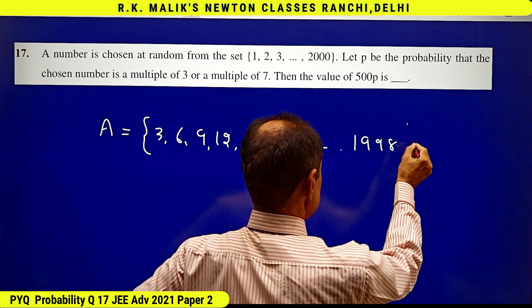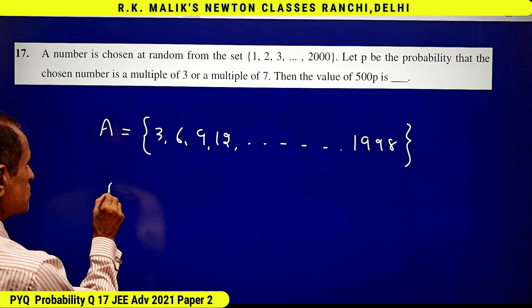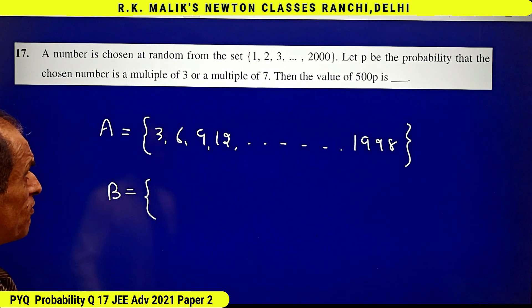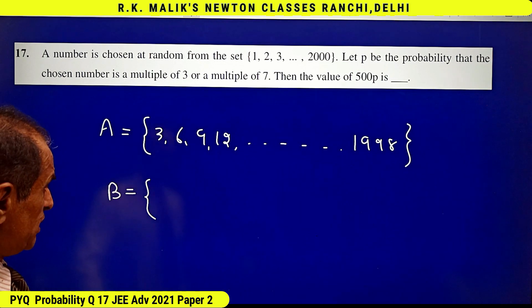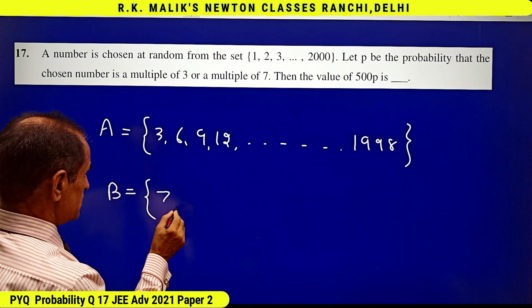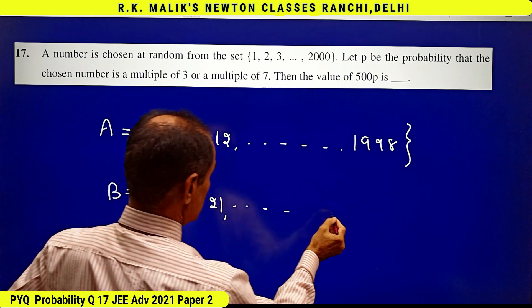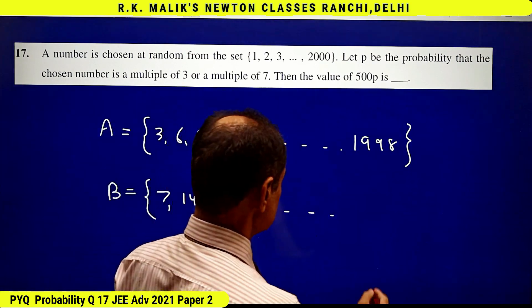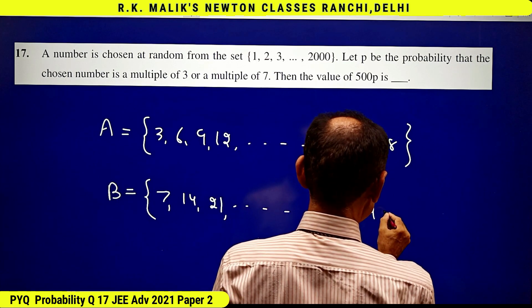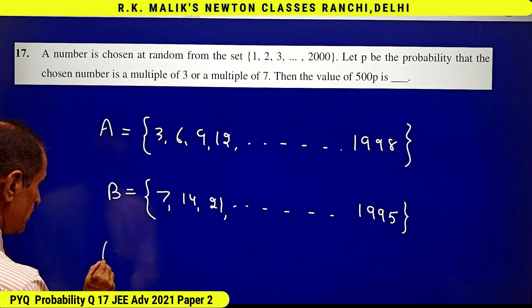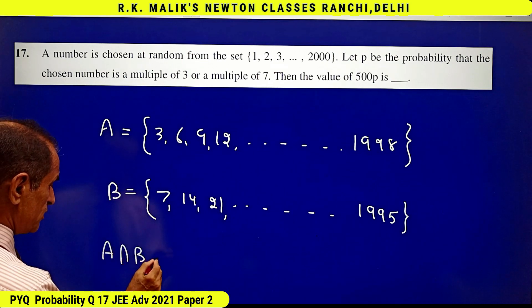...and the last will be 1998. And let B denote the set of all those numbers which are multiples of 7. That is 7, 14, 21 and the last will be 1995. And A intersection B...